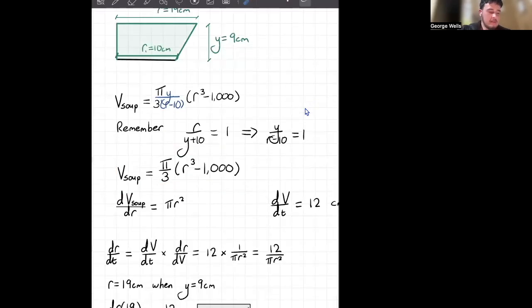From here, we can differentiate. Pull out our 3 to the front. 3 times all that. These just cancel out. 3 minus 1. Left with 2. So we get pi r squared there. The minus is thousand. That's just a constant. That's going to disappear off into the void. Don't have to worry about that.